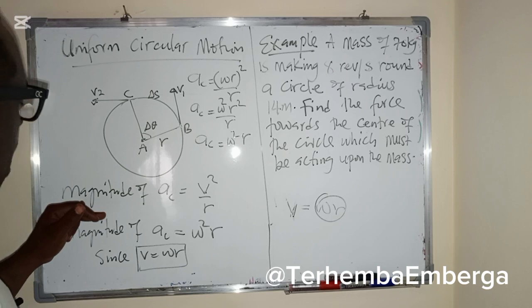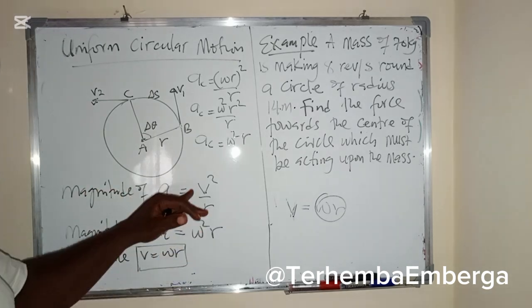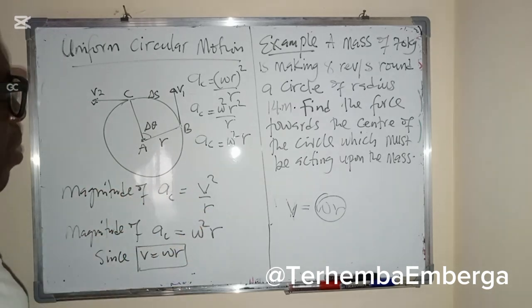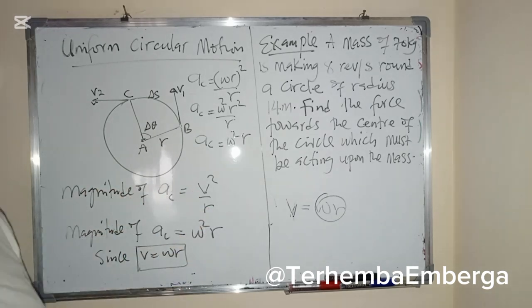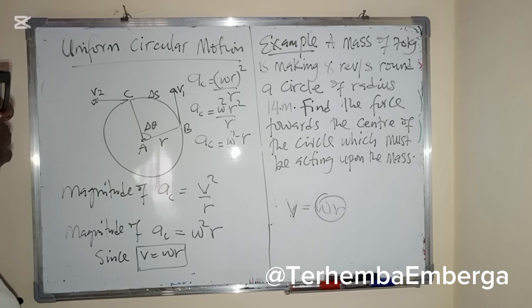This is the magnitude of centripetal acceleration when angular velocity is involved, and this is the magnitude when tangential velocity is involved. So we have a problem here.